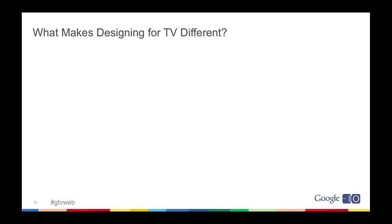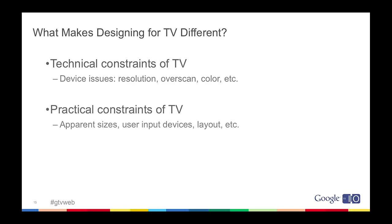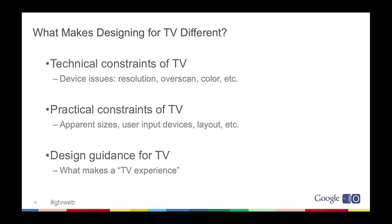The point we're trying to get at with both of these quick demos is that there are different concepts you need to keep in mind - different ideas behind what you need to do to design for TV. They fall into three basic categories. The first one is technical constraints, things like resolution TV runs at and color issues. Then there are practical constraints, which is when you sit ten feet away things look smaller - and what kind of input you typically have on your couch. And then finally, we want to cover a few things that are design guidance, which are a little bit fuzzier. These are what makes a TV experience, and when you violate them the user is going to find it a little bit different from regular TV.